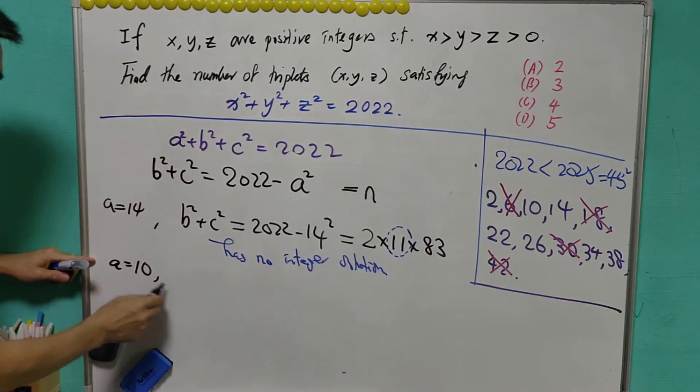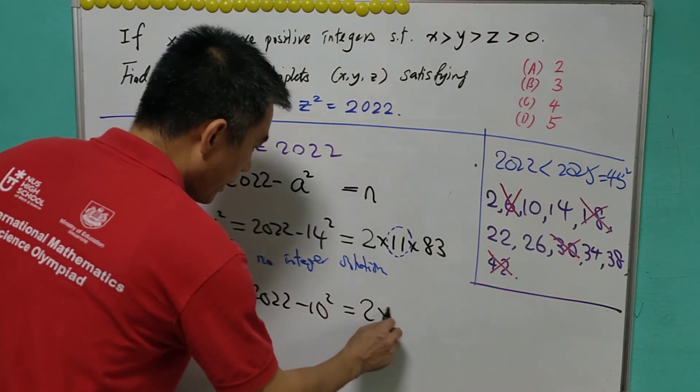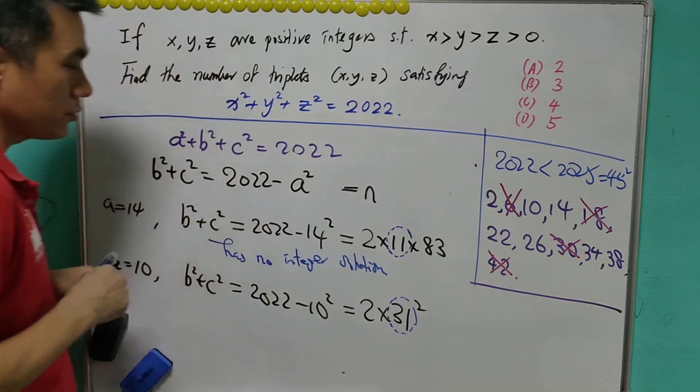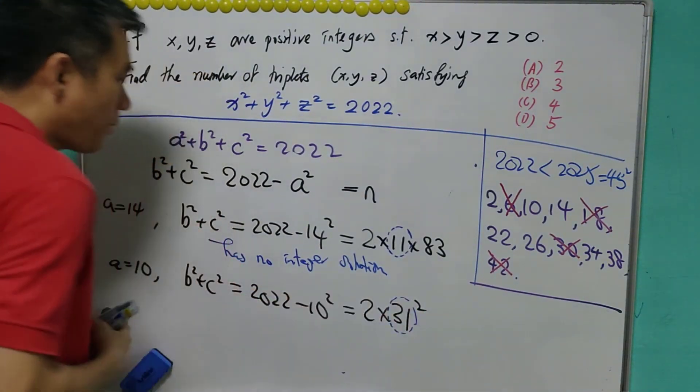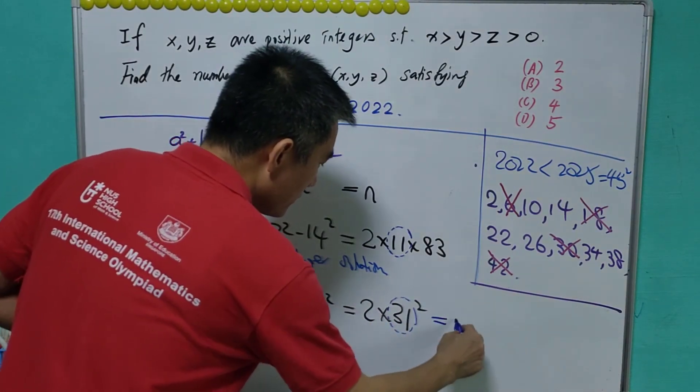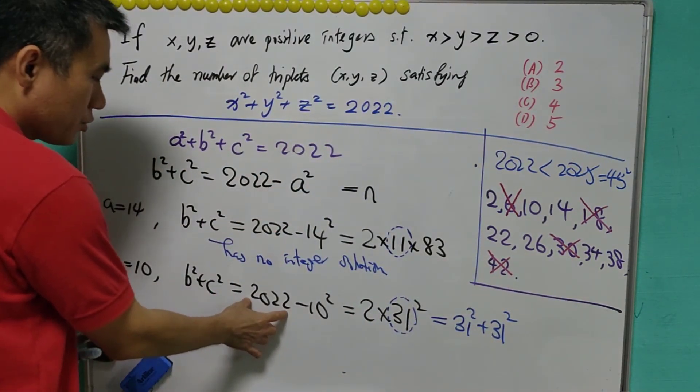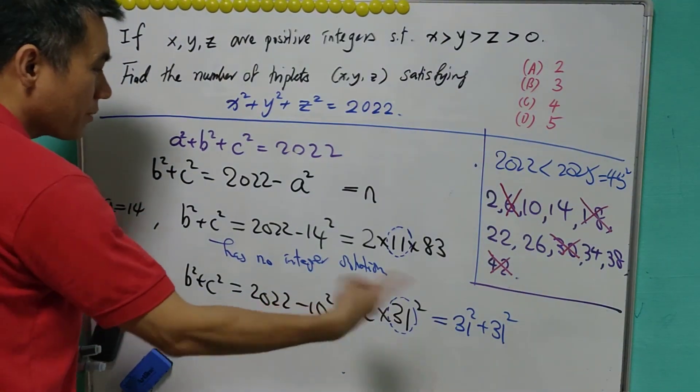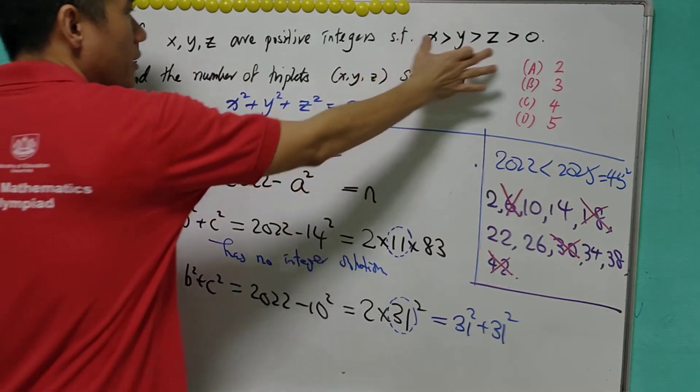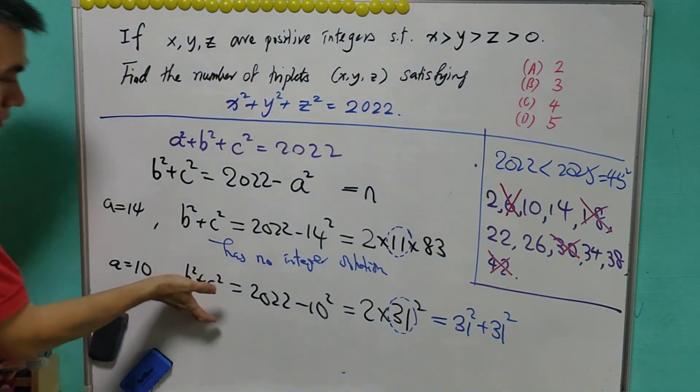When a equals to 10, b square plus c square equals to 2022 minus 10 square. It will be 2 times 31 square. 31 itself is congruent to 3 mod 4. But this is an even power, it means that it will have a solution. But the solution is 31 square plus 31 square. So meaning that 2022 will equal to 10 square plus 31 square plus 31 square. And this is not acceptable for our original question because x is greater than y, greater than z, greater than 0. So this is also not the answer that we want.